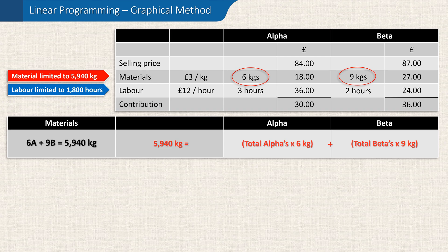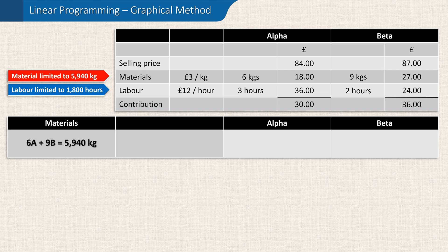Now we have this equation, we can use it to work out some possible scenarios which we can plot on a graph. Let's assume we make no alphas at all, so A equals zero. This would mean that the betas, which need 9 kilograms of material per unit, would use up all 5,940 kilograms of material. 5,940 divided by 9 is 660, which means we could make 660 units of beta if we made no alphas at all.